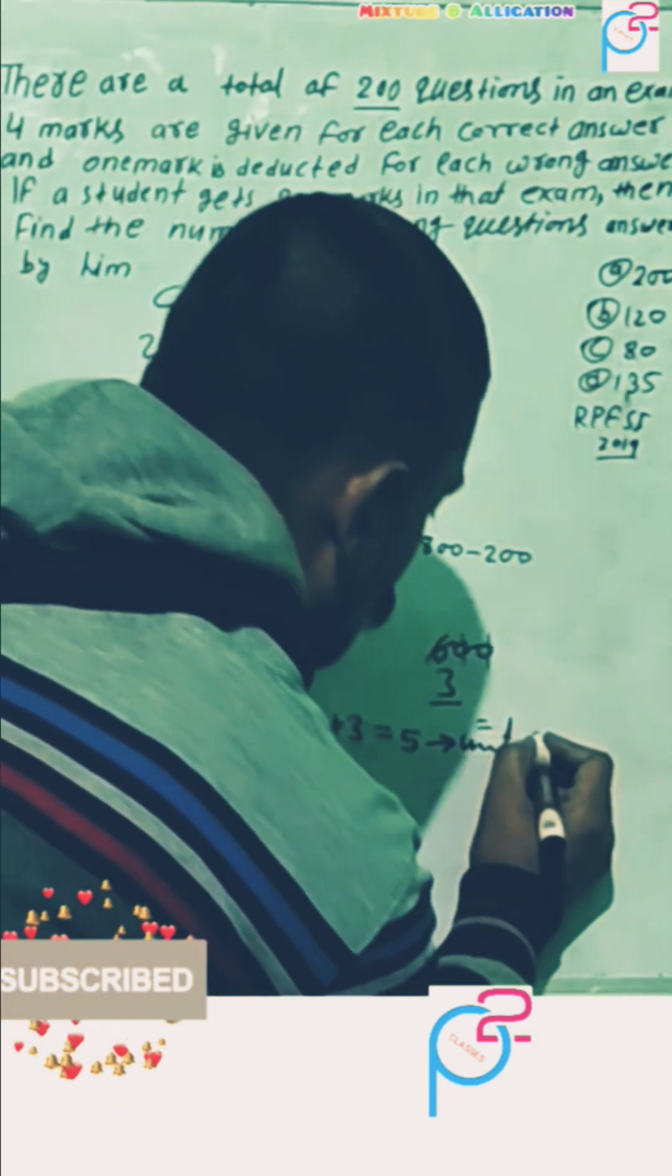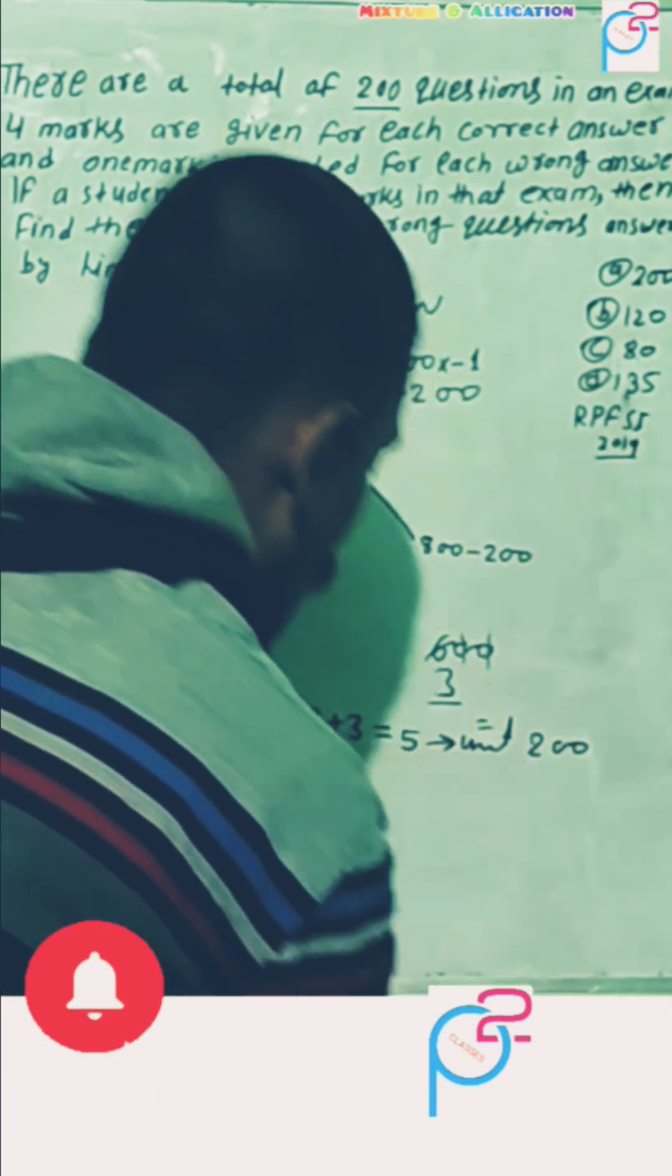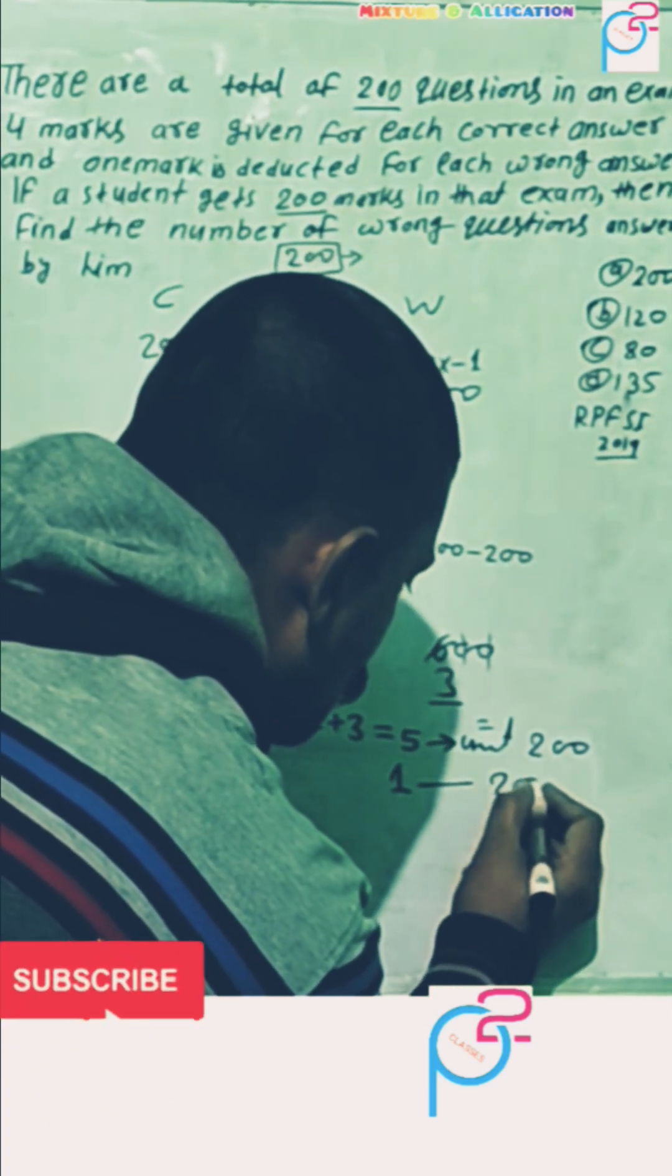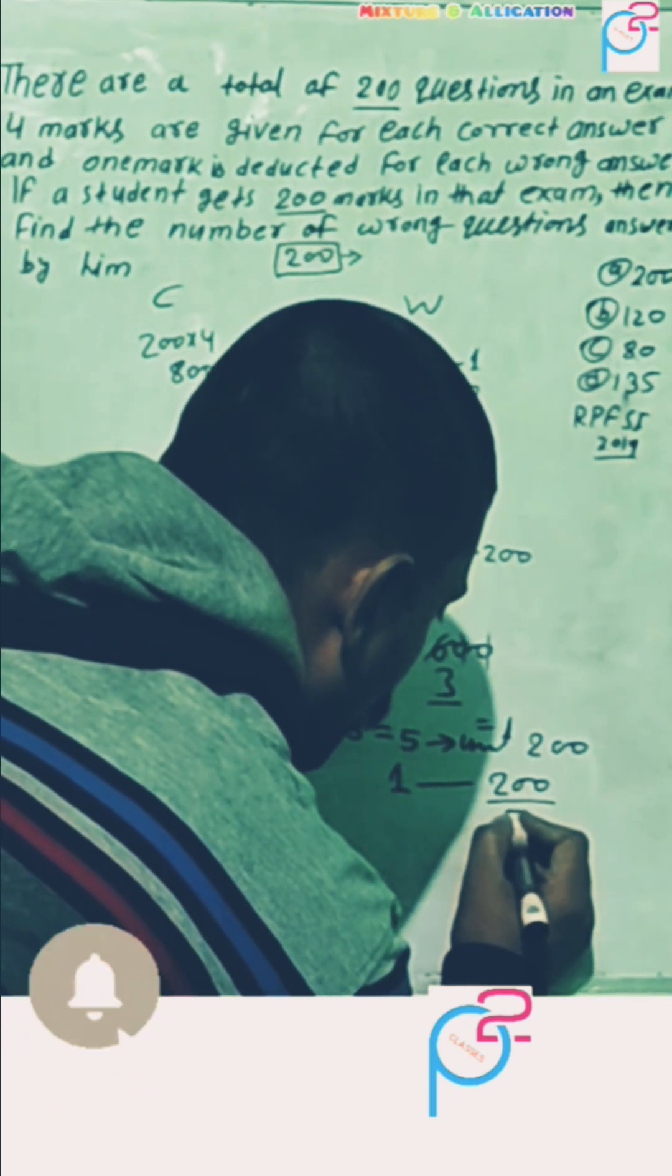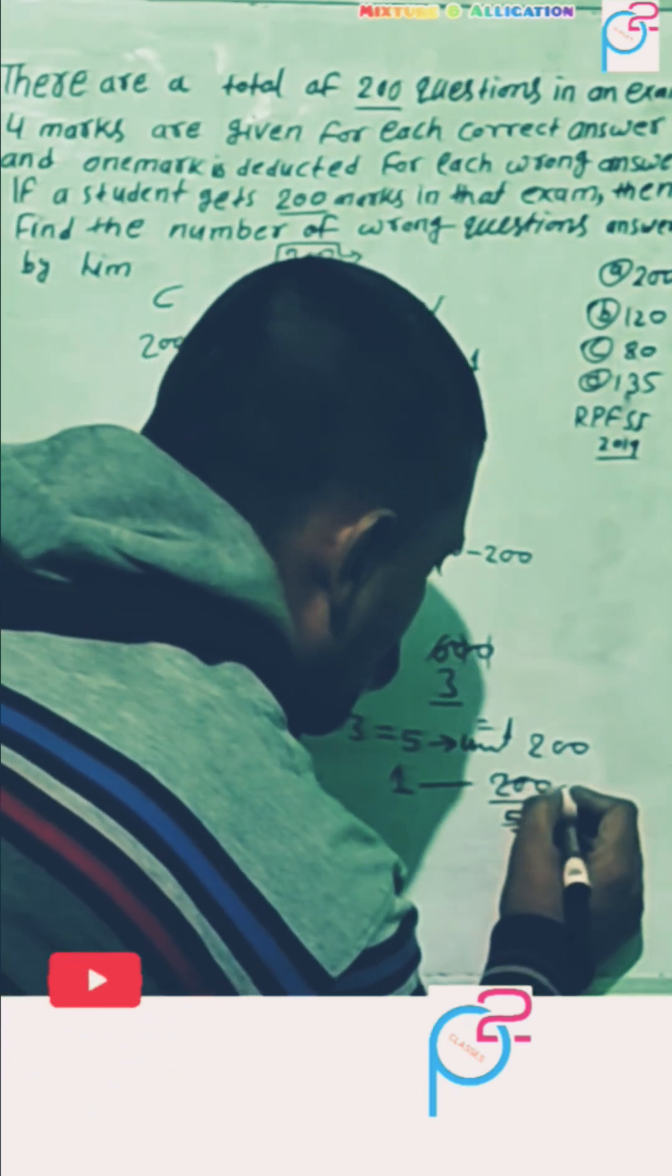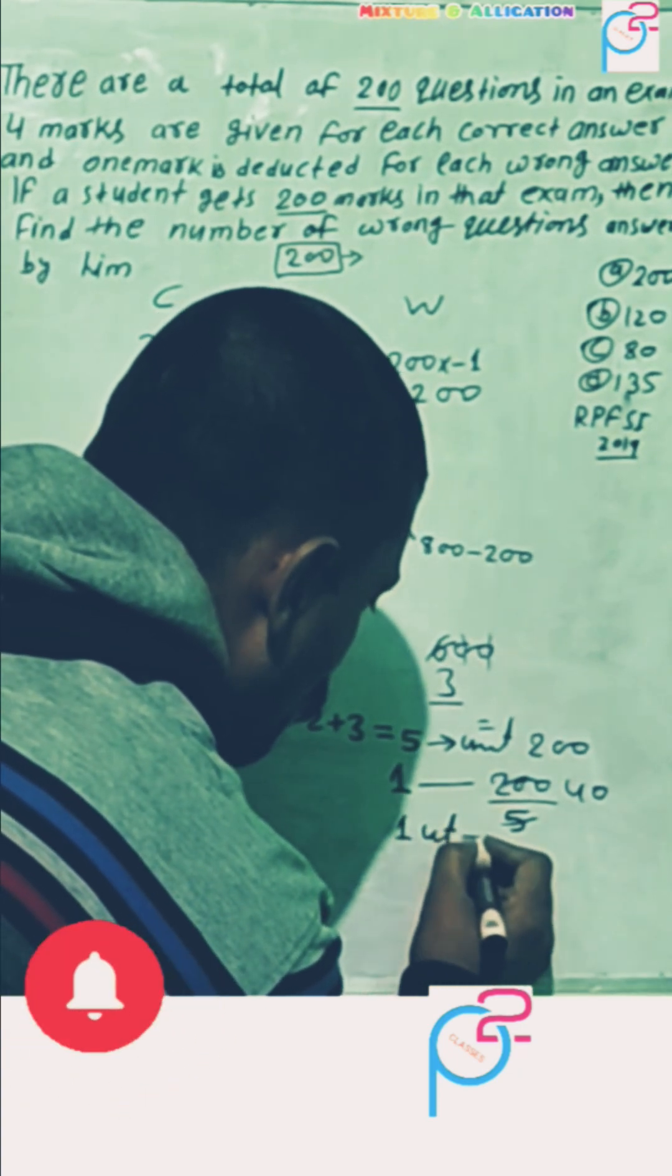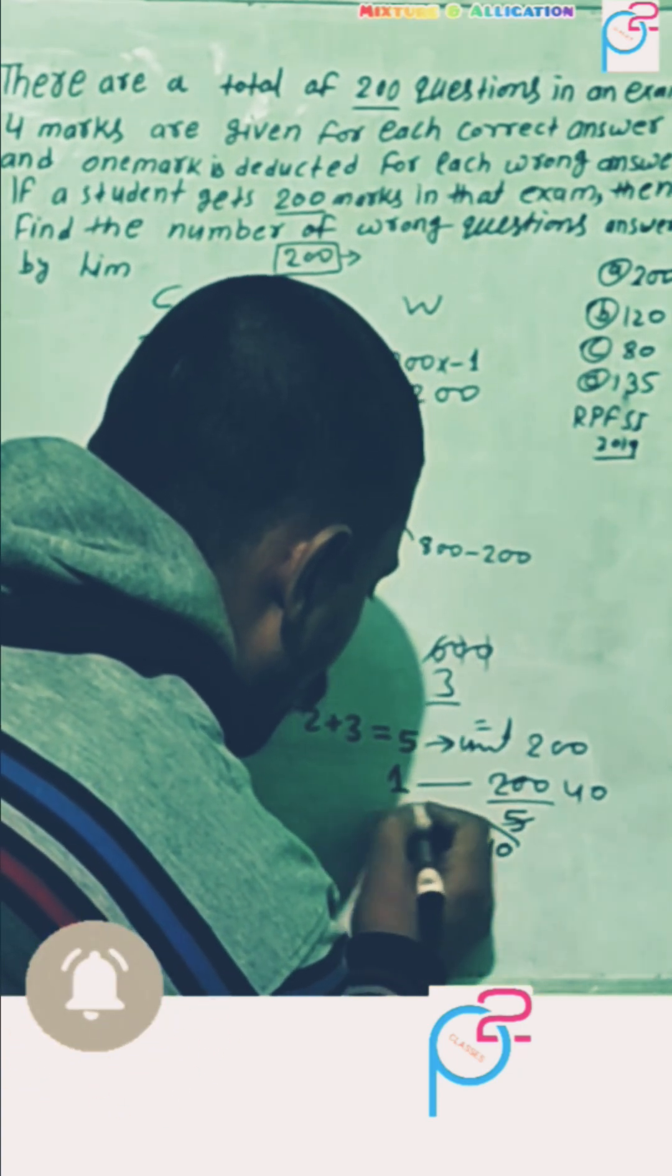One unit equal to 200 divided by 5. You got here 40. Means 1 unit is equal to how many? 40. Okay.